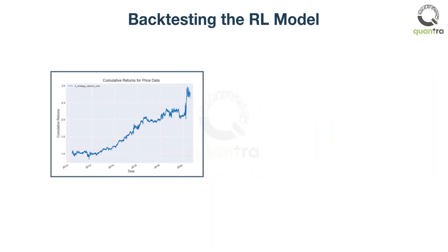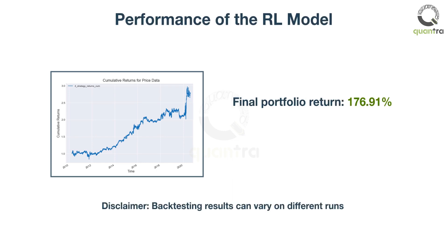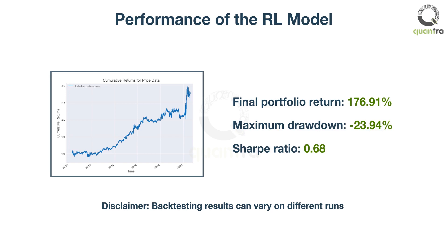After 10 years, the model has learned well to predict financial time series. Notably, it even skipped the COVID-19 market fluctuations. The strategy returns are shown on screen. But returns are not the only factors we look at while analyzing the model — we also check the maximum drawdown and Sharpe ratio of the strategy. This helps us analyze the risk associated with the model.